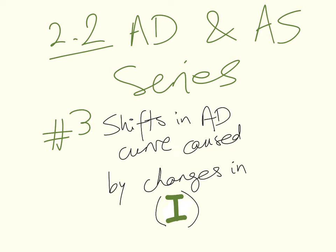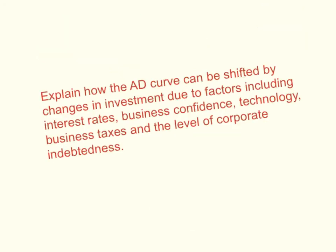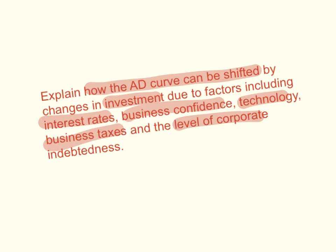This is the third video of the Aggregate Demand and Aggregate Supply series, which is Unit 2.2 in the IB Macroeconomic syllabus. In this video I will explain the shifts in the aggregate demand curve that are caused by changes in investment spending by firms. The learning outcome is to explain how the aggregate demand curve can be shifted by changes in investment due to factors that include interest rates, business confidence, technology, business taxes, and the level of corporate indebtedness.